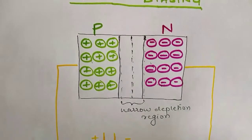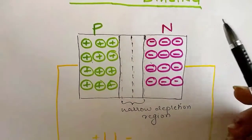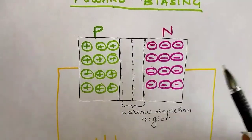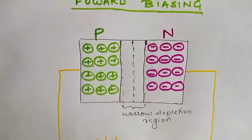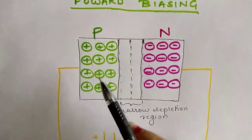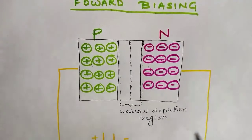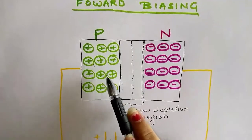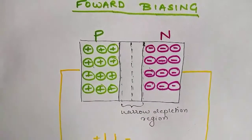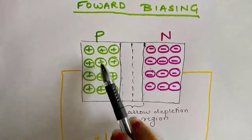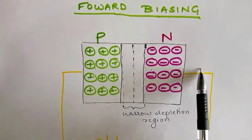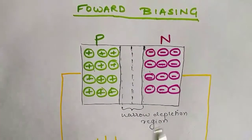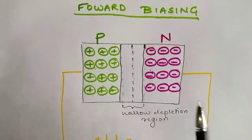To use the diode as a closed switch, we use forward biasing, wherein the p-type is connected to the positive terminal of the battery and the n-type is connected to the negative terminal. Here, repulsion occurs between the positive and negative terminals, and hence the electrons migrate towards the p-type and move out towards the positive terminal. The same occurs with the holes — they migrate towards the n-side and move out to the outer circuit towards the negative terminal. This generates current in the circuit and hence it acts as a closed switch.